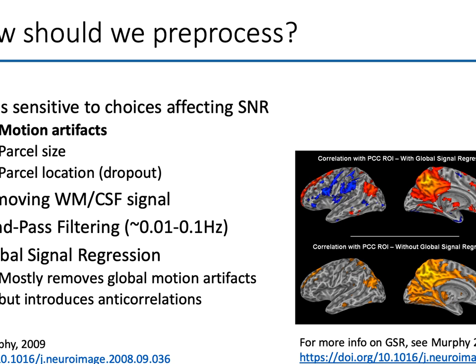Global signal regression can be really effective at removing global motion artifacts, and for that reason some people are strong proponents of it. But a lot of people at the NIH will advise you strongly against it, because it can introduce anti-correlations — it can make two regions look anti-correlated when in fact they're positively correlated. In fact, global signal regression mandates anti-correlations — it makes it impossible not to get them — even though we know the whole brain does tend to move together based on real neural activity. You have to think carefully about what's going to give you an unfair advantage, and consider global signal regression as a potential tool that comes with risks.